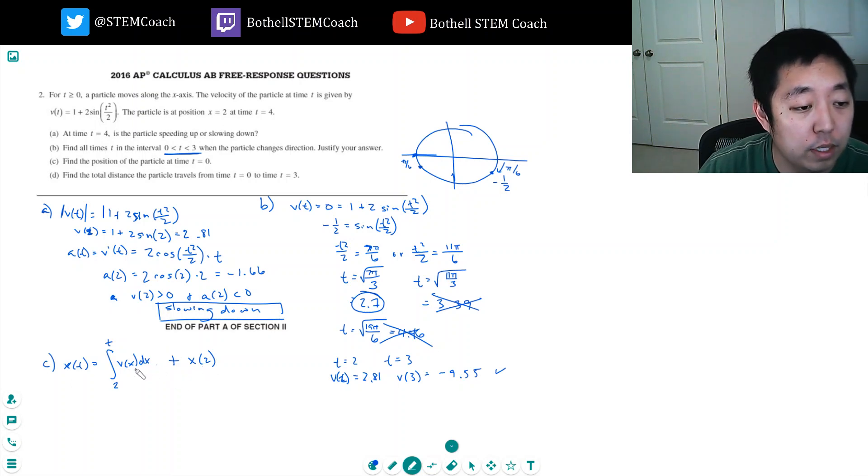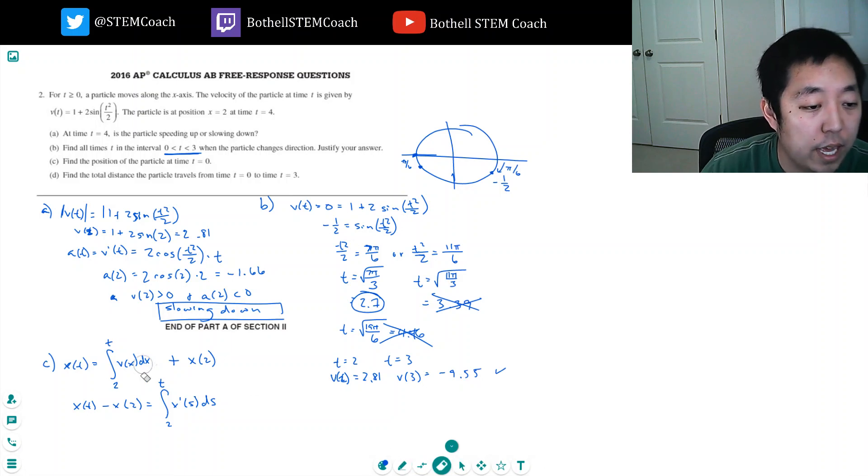X(t) minus X(2), if I write it like this. I should pick a different letter, I'll use s, because x is confusing already. This is fundamental theorem of calculus. So I just simply rearranged it.